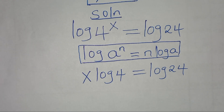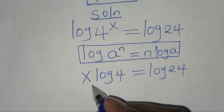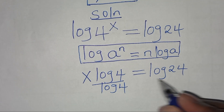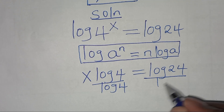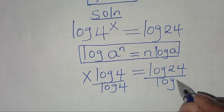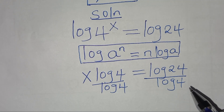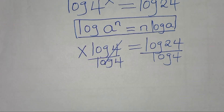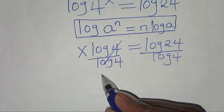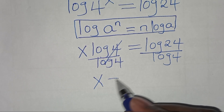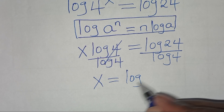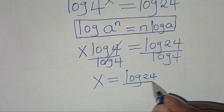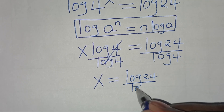The next step here is to divide both sides by log 4. Simplifying, we get x is equal to log 24 divided by log 4.